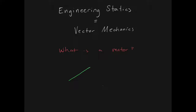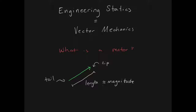A vector is usually represented by an arrow. It has a tail end and a tip end, and then it has some length. The length is representative of the magnitude. It also has direction, which is represented by the orientation of the tip to tail — or another way to think about it would be the arrowhead.